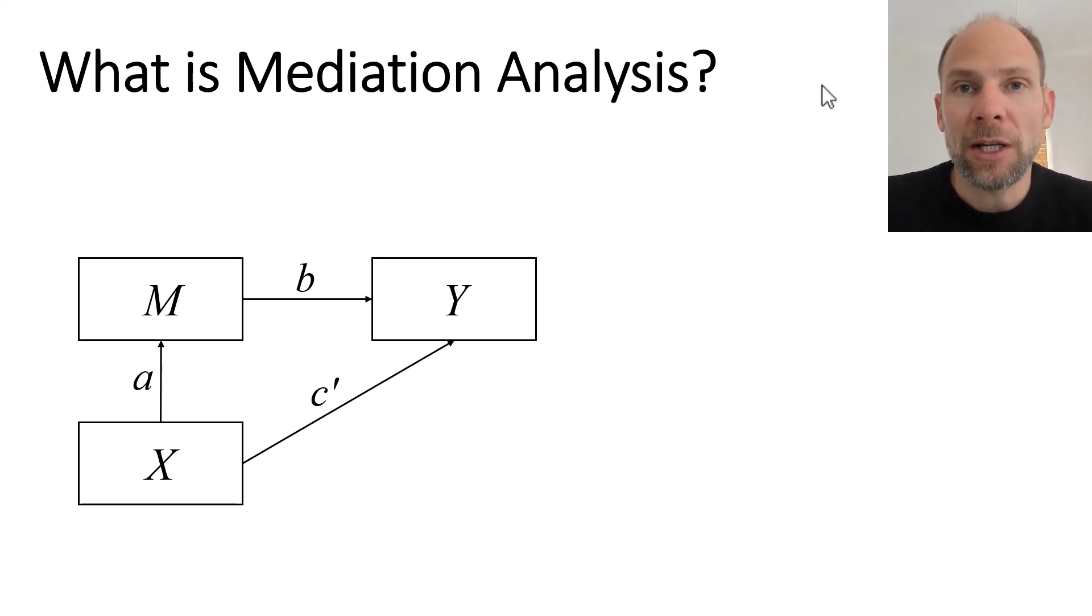In this picture here you can see a path diagram with three variables X, M and Y. X is a predictor variable or an exogenous variable. It is not influenced by other variables in this model but it influences M and Y. So Y is our outcome or dependent variable here and M is called a mediator variable.